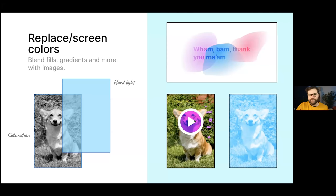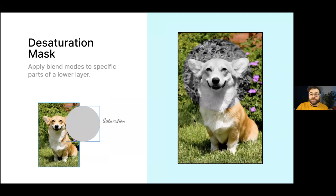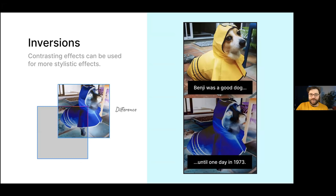Next, desaturation masks: you can desaturate part of an image using blend modes as a mask over just a portion — for example, keeping only the Corgi's face in color while the rest is desaturated. Finally, inversions: more creative effects like things you might see on vintage television shows. Check out the later sections like difference and contrast for those examples. And I'm out of time — thank you all, good seeing you again.